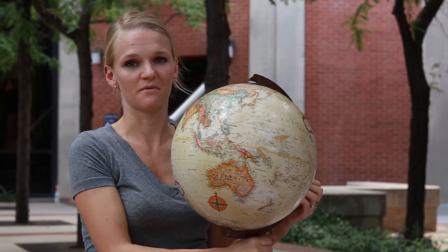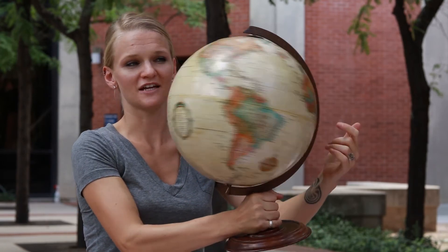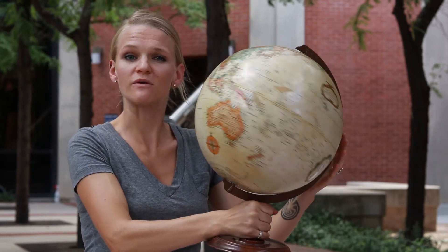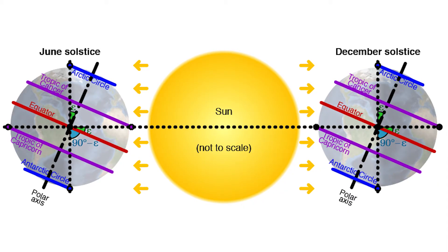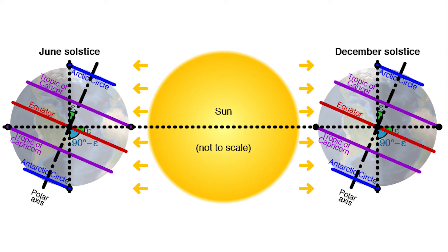The other detail we need to keep in mind is that the Earth's rotational axis is inclined 23.5 degrees to the plane of the Sun. Eclipse paths look different from year to year because of the tilt of the Earth's axis of rotation and the time of year. As Earth orbits the Sun, it maintains this 23.5 degree tilt.